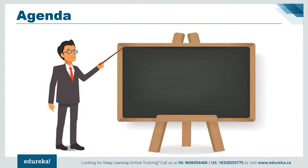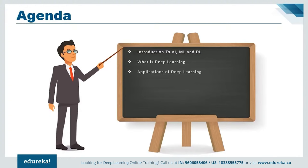I'll start off this video with an introduction to artificial intelligence, machine learning, and deep learning, and how they are related in terms of data science. Moving forward, we'll learn a little bit about AI and ML and understand how machine learning failed, which brings us to the main topic of this session — deep learning. We'll understand how it overcame all the problems that machine learning faced. Next, we'll discuss some important applications of deep learning and see some really cool applications that are too good to be true.